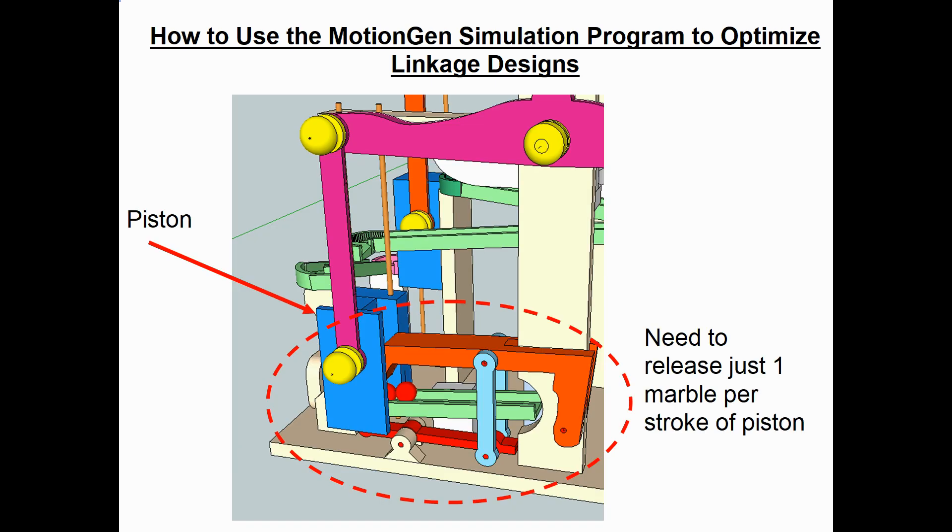Here's my SketchUp design of part of my marble machine. This is the loading mechanism where I have a blue piston on the left which moves up and down. When it comes down, it hits the red beam, which in turn raises the bluish link and raises the red swinging arm. I need to release just one marble per stroke of the piston. Without this mechanism, multiple marbles would either load or fall out.